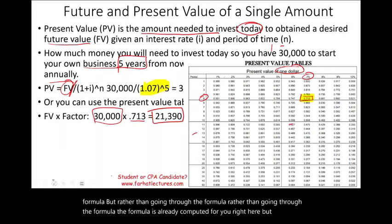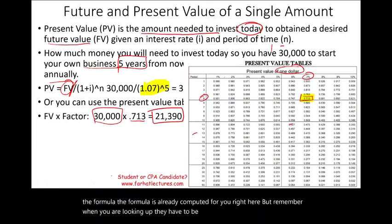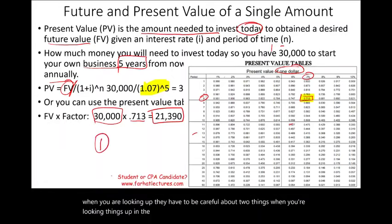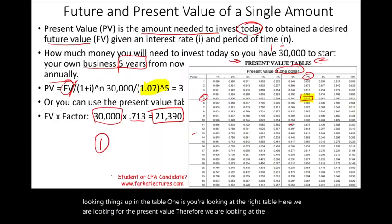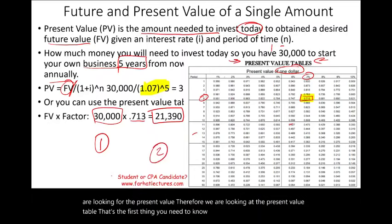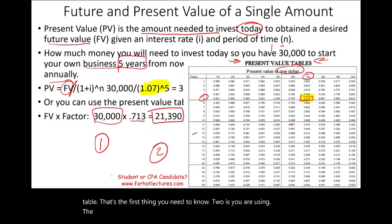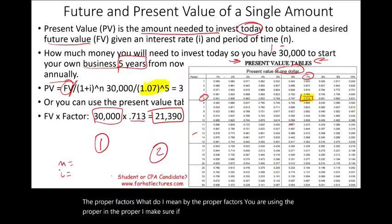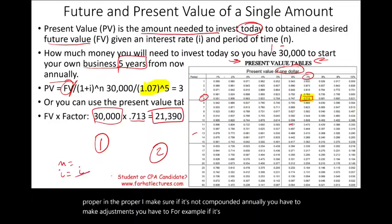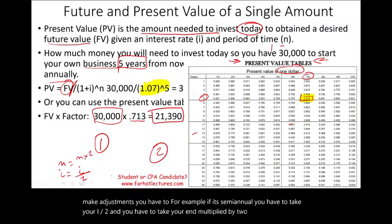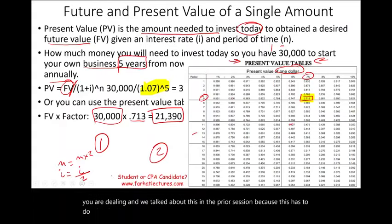When looking things up in the table, be careful about two things: first, make sure you're using the right table — here we need the present value table. Second, use the proper n and i factors. If compounding is not annual, make adjustments: for semi-annual compounding, divide i by 2 and multiply n by 2.